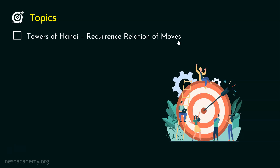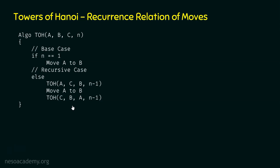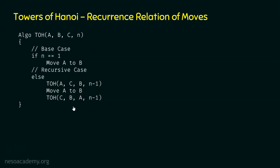Let's understand how to write the recurrence relation of moves of Towers of Hanoi from the algorithm. We saw this algorithm in our previous lectures. We know this algorithm has the capability to solve the problem of Towers of Hanoi — that is, to transfer the disks from one peg to the other. From this algorithm, we can write the recurrence relation of moves, and from the recurrence relation of moves, by applying the substitution method, we can easily obtain the formula to calculate the number of moves when there are n disks. This algorithm has the capability to transfer n disks from peg A to peg B via peg C.